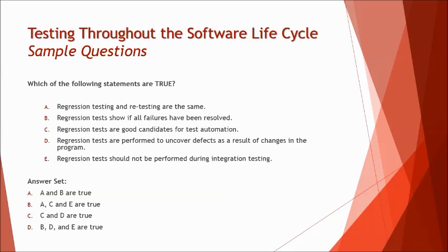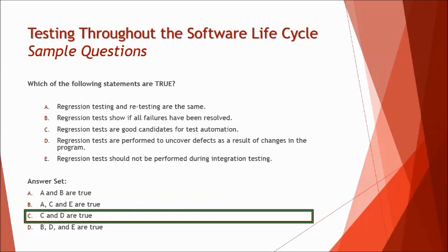So we have only two true statements: C and D. Looking at the answer set, there's only one option that says C and D are true. That's how you make it simple — evaluate each statement yourself first, get your own answer, then look at the answer set, which makes your job much simpler.